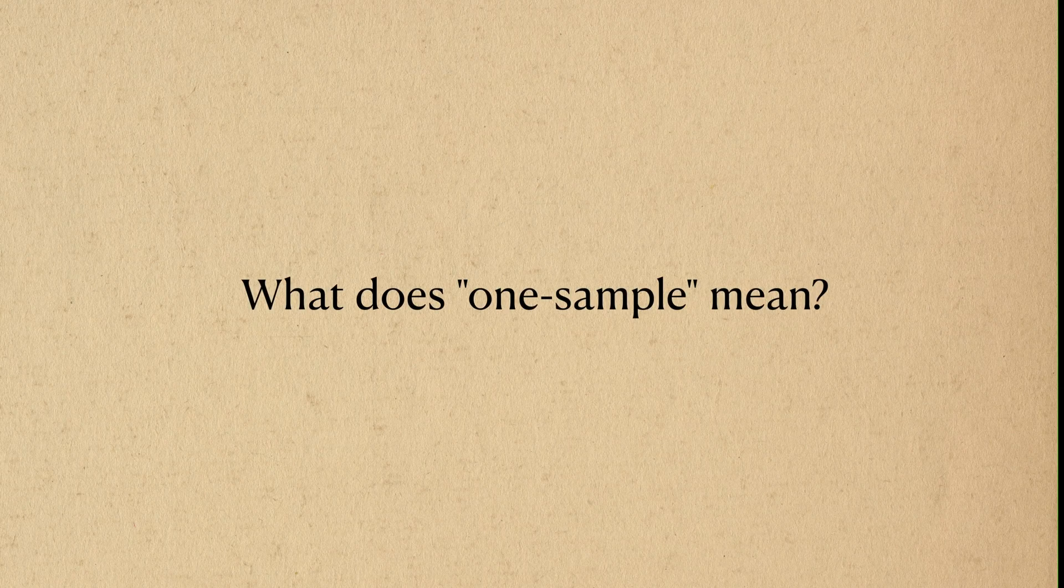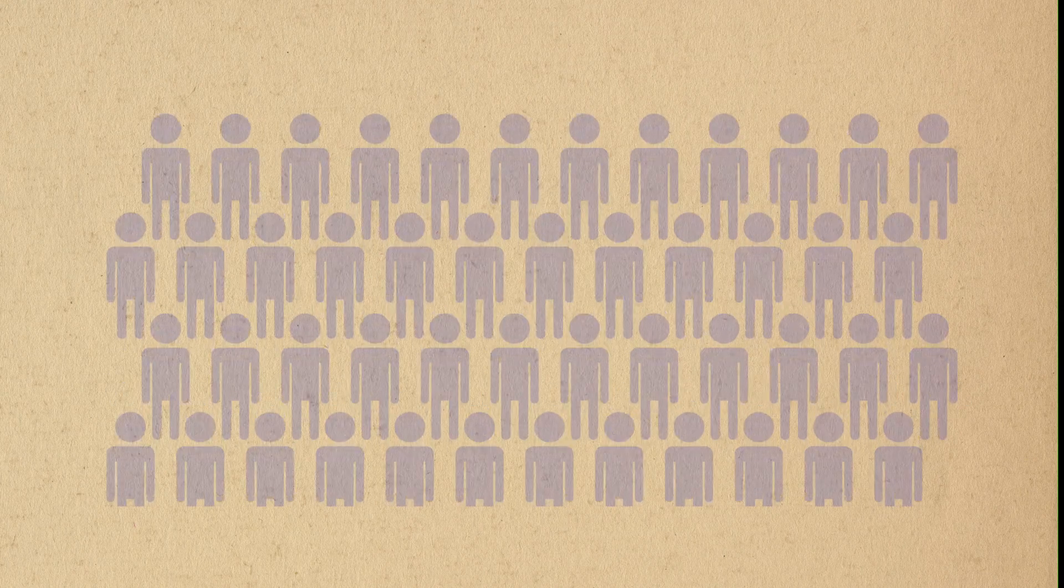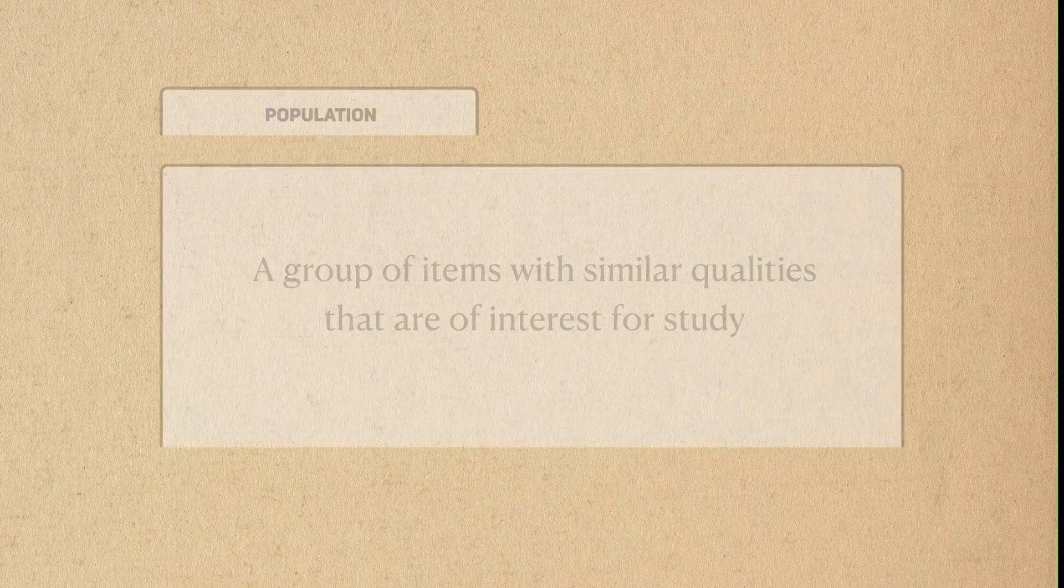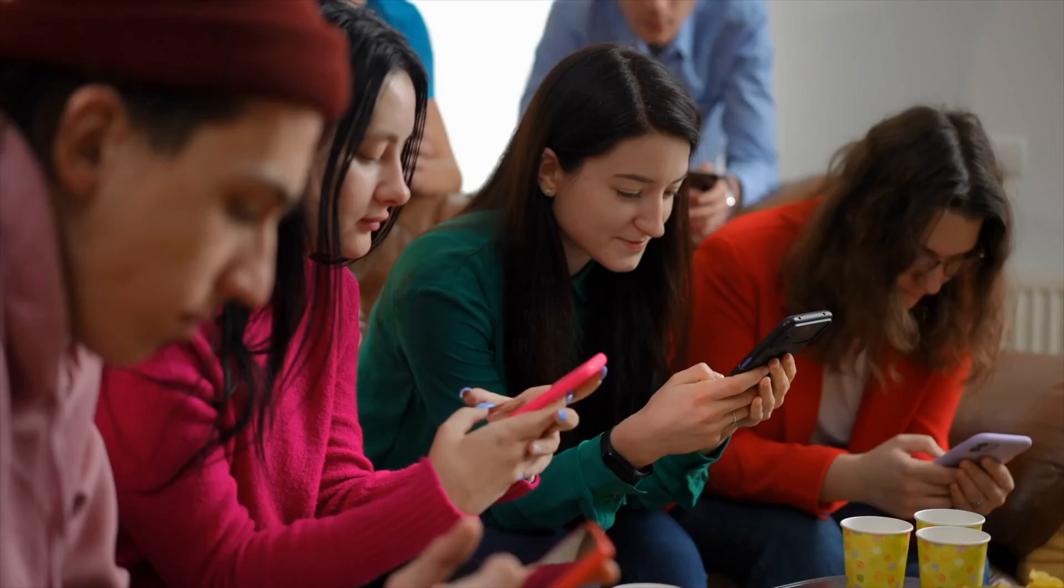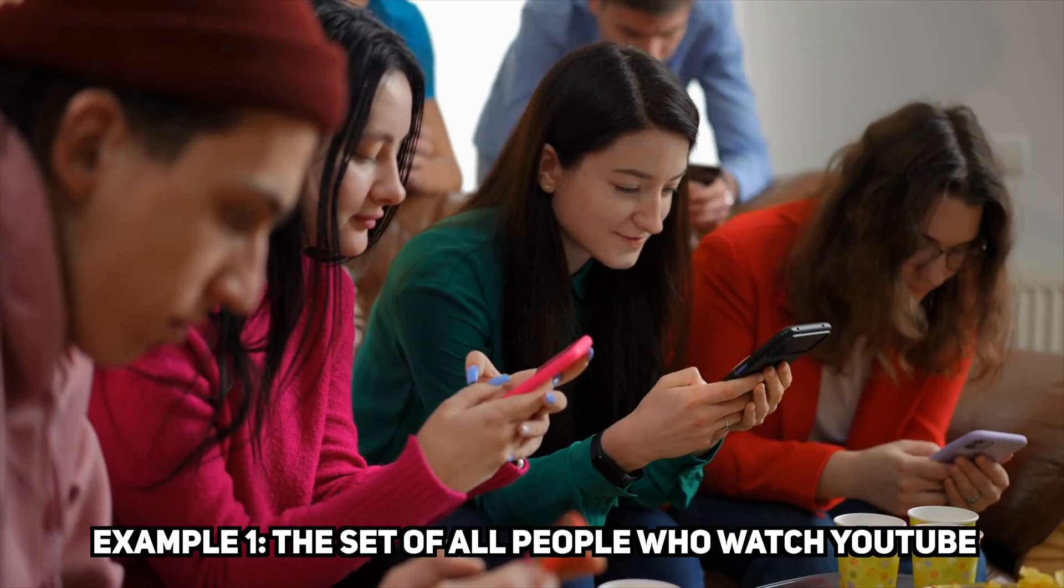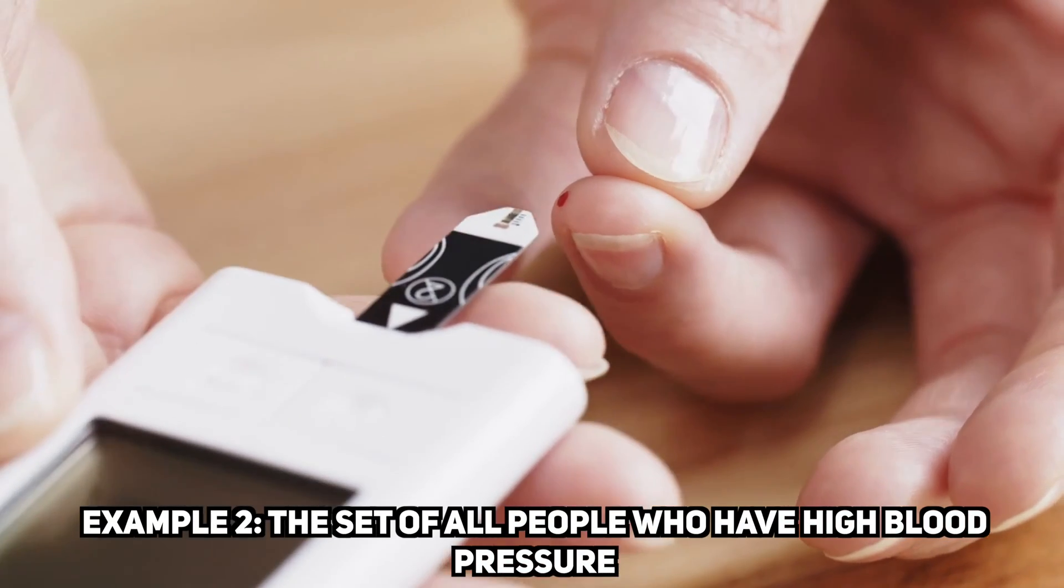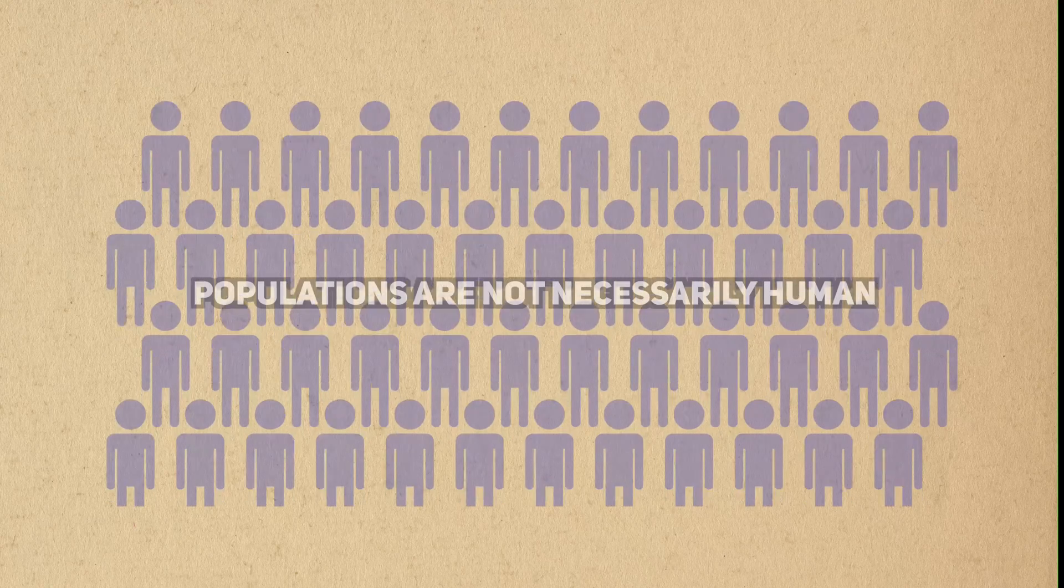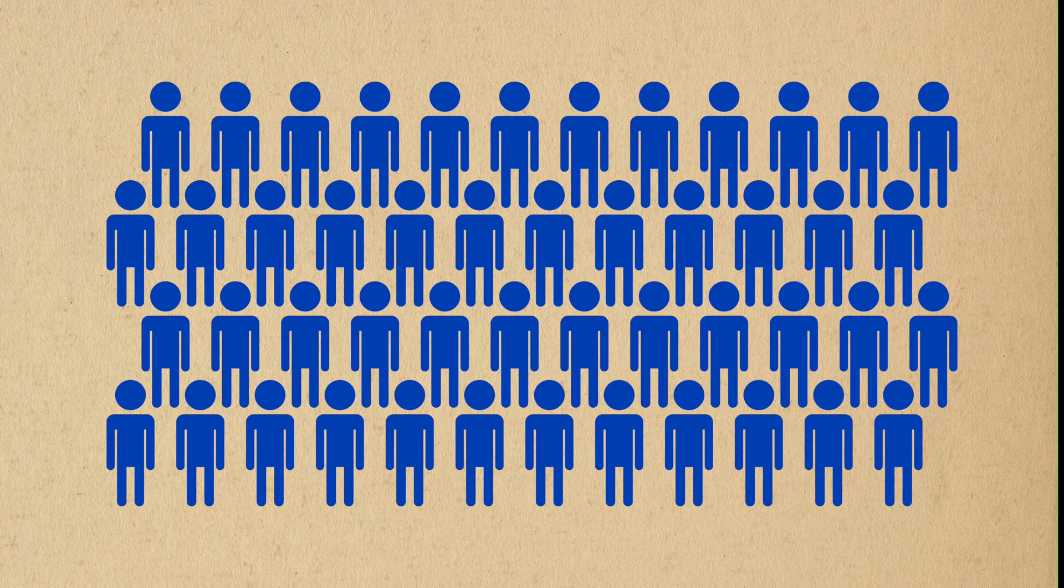Before we can understand the phrase one-sample, we have to understand what a population is. In statistics, the word population has a very specific meaning. It is a group of items with similar qualities that we're interested in studying. One example of a population is the set of all people who consume YouTube content. Another example is the population of all patients diagnosed with type 2 diabetes. Populations don't have to be human, but as a pharma company, humans are usually who we study.